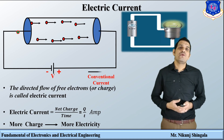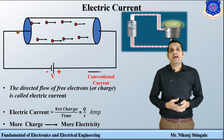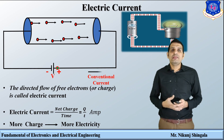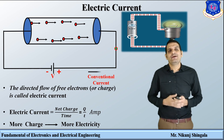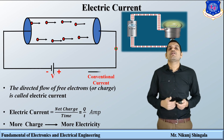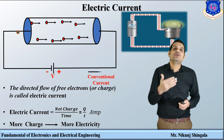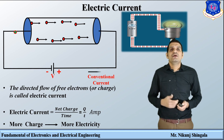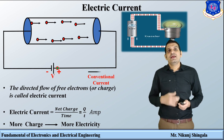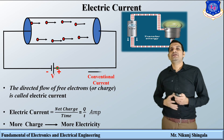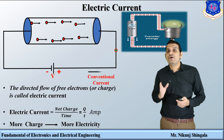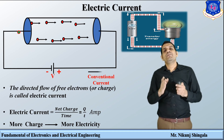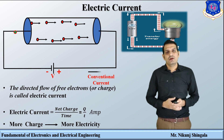How do electrons actually flow? The negative terminal of the battery repels the electrons, and those electrons repel the neighboring electrons. During this process, energy is transferred from one electron to another and they push each other away. This is how electric current flows through the circuit and the bulb can glow. So electron current flows from the negative terminal to the positive terminal of the battery, while conventional current flows from positive to negative.